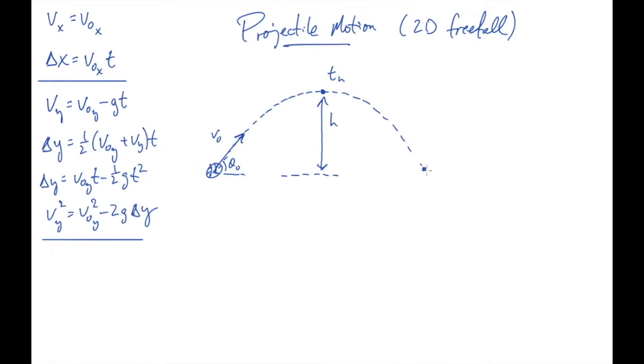And the third thing that we'll find is how far sideways does this thing go by the time it goes up and comes back to the same height it was launched from. That's what's called the range. It's the horizontal distance it covers by the time it comes back to the same height. So we want to calculate r, which is this distance right here.